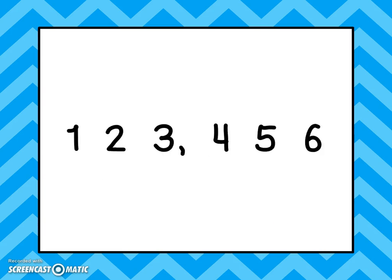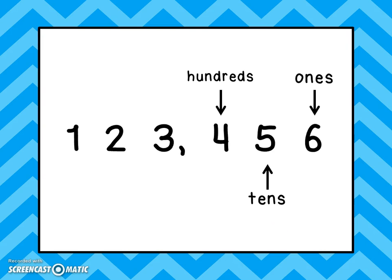Here in this number we have 123,456. The six happens to be in the ones place — that means we have six ones, six little pieces. The five is in the tens place, and that means we have five groups of ten, which equals fifty. The four is in the hundreds place, and that means we have four groups of one hundred, or four hundred. The three is in the thousands place — that means we have three groups of one thousand, or three thousand.